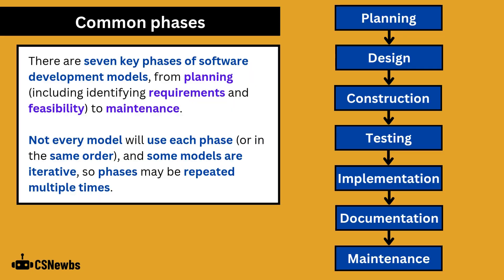There are seven key phases of software development models, from planning to maintenance. Not every model will use each phase or in the same order, and some models are iterative so phases may be repeated multiple times.